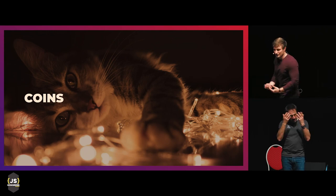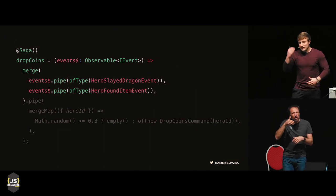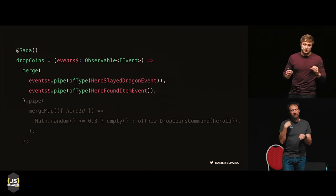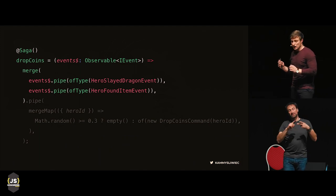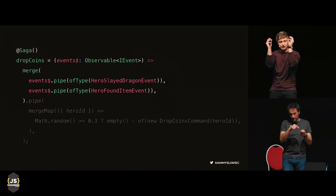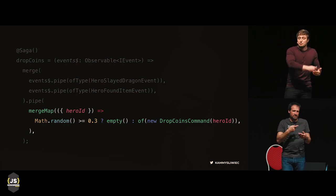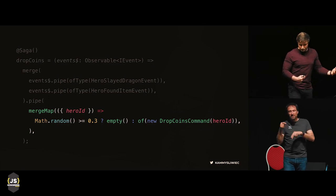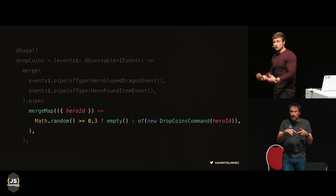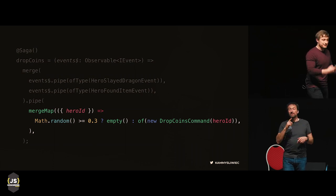For coins, it's even simpler — think about two different streams. We have a stream of HeroSlayedDragon events and a stream of HeroFoundItem events. We use the merge operator from RxJS to combine these two streams. Then we can take either event, filter by a 30% probability using Math.random(), and mergeMap it to a nested stream — either empty (dispatch nothing) or a DropCoins command. Then we create an appropriate command handler for the DropCoins command.